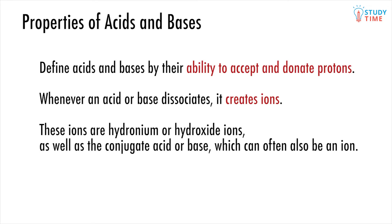You will hopefully remember that we define acids and bases by their ability to accept or donate protons. And if you remember this idea, it's not a far jump to recall that whenever an acid or base dissociates, it creates ions. These ions are hydronium or hydroxide ions, as well as the conjugate acid or base, which can often also be an ion. The fact that ions are created isn't just an interesting piece of trivia, but instead leads to a number of different properties possessed by acids and bases.